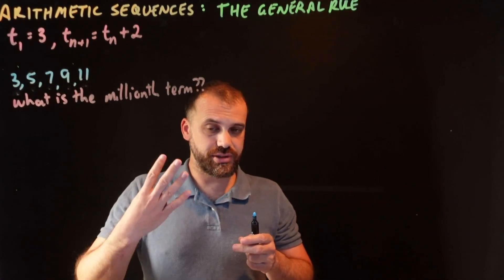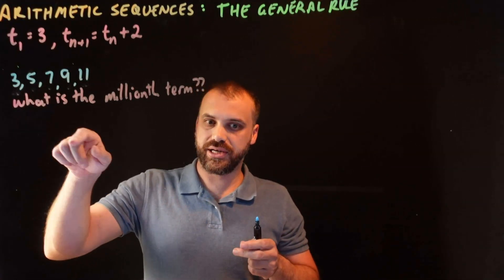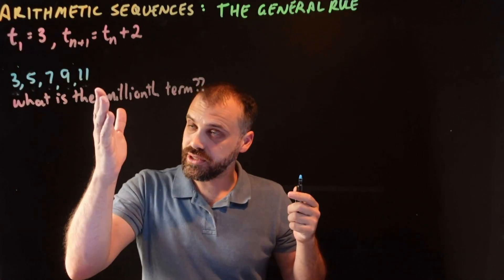I have 4 common differences, so 4 lots of 2. 3 plus 4 lots of 2 is 3 plus 8, which is 11.